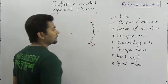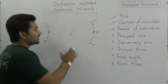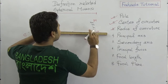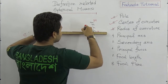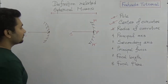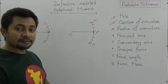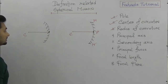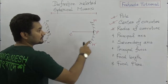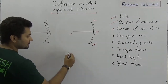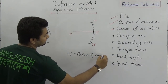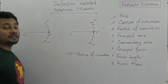The radius of curvature: since it was a sphere, the radius of the curvature is the line joining C and P — the center of curvature and the pole. So CP is the radius of curvature, expressed by small r.